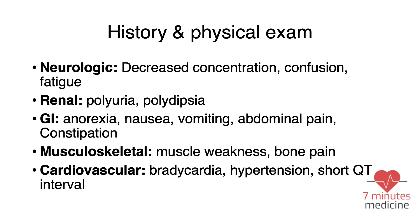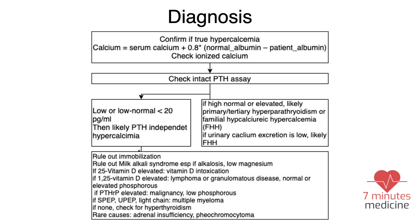In the GI system, it can cause nausea, vomiting, abdominal pain, and a picture of pancreatitis. For the musculoskeletal system, you might have bone pain. For the cardiovascular system, the most important finding is a short QT interval. The first step in diagnosis is to confirm whether this is real hypercalcemia, because the lab will send you the total calcium.